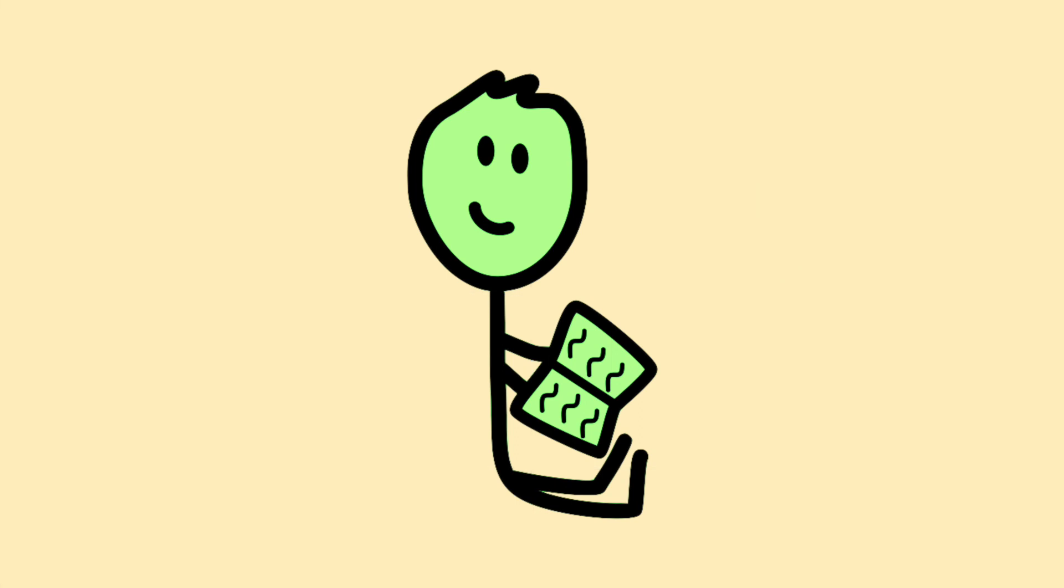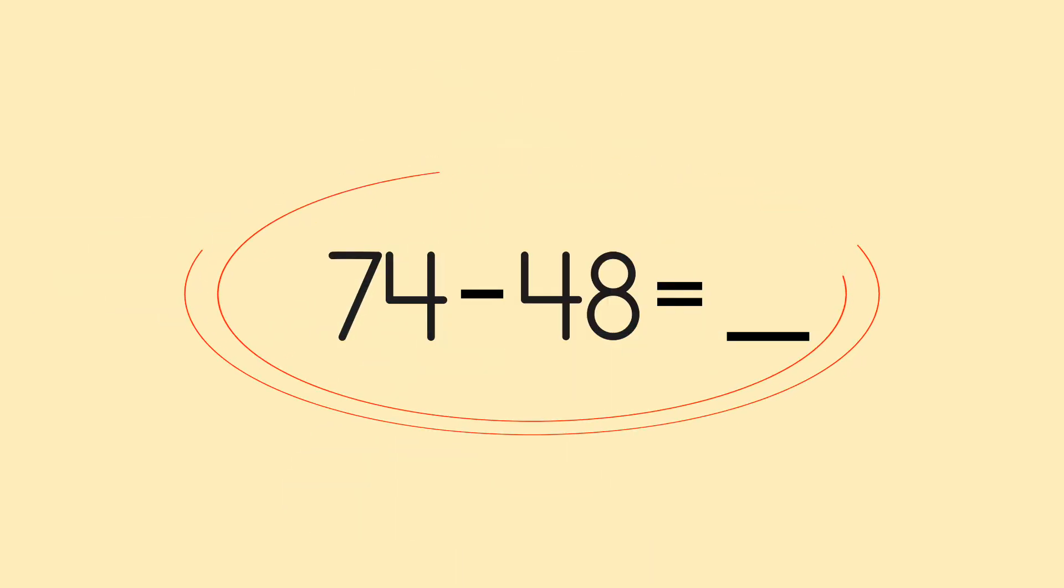So let's go over what Kelvin did to find the answer. First, he took a look at the number sentence. 74 minus 48 equals blank.